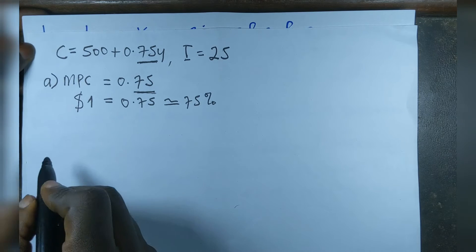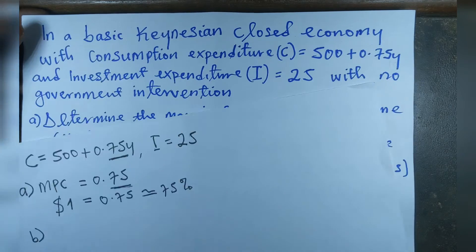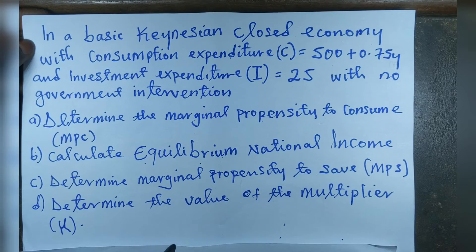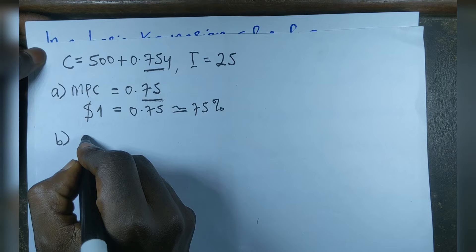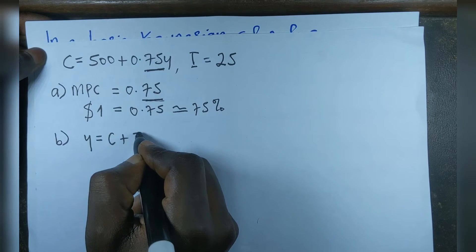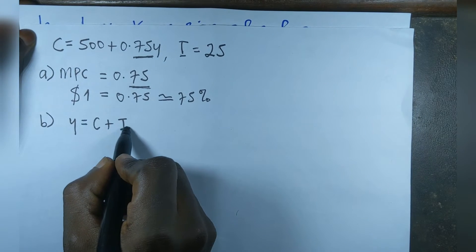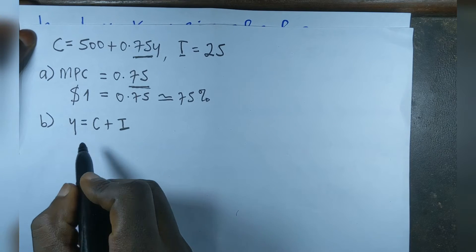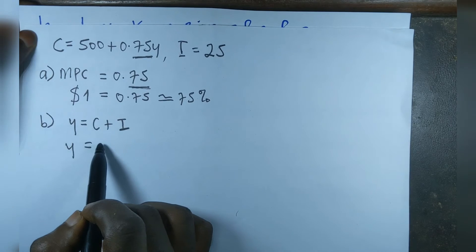That's done for Part A. For Part B, we should calculate the equilibrium national income. To calculate the equilibrium national income in this sector of the economy, we will have Y equal to C plus I.